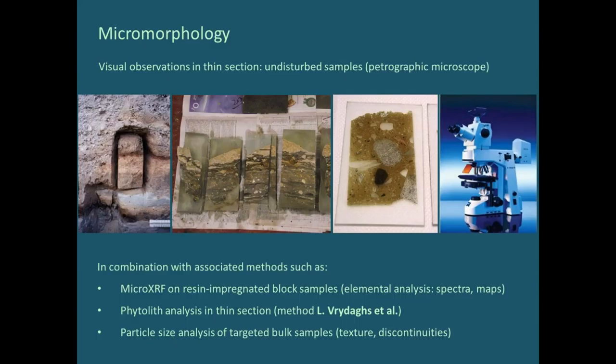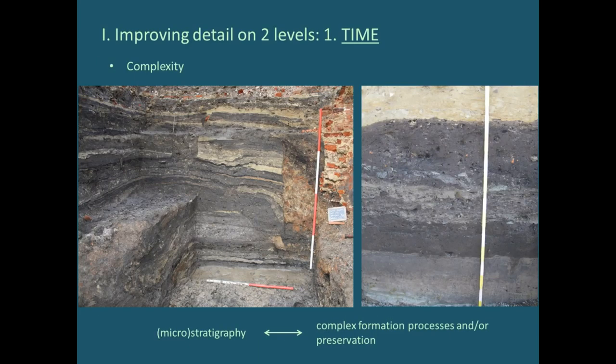The additional methods include micro XRF, an X-ray method that maps the elemental composition of samples — we can do this on the blocks themselves, preserving the relationship between different components. We've also used phytolith analysis in thin sections, not in bulk samples, done by Luc Freydach in Belgium. And I've used particle size analysis, which can help us see discontinuities in texture and identify possible truncation changes.